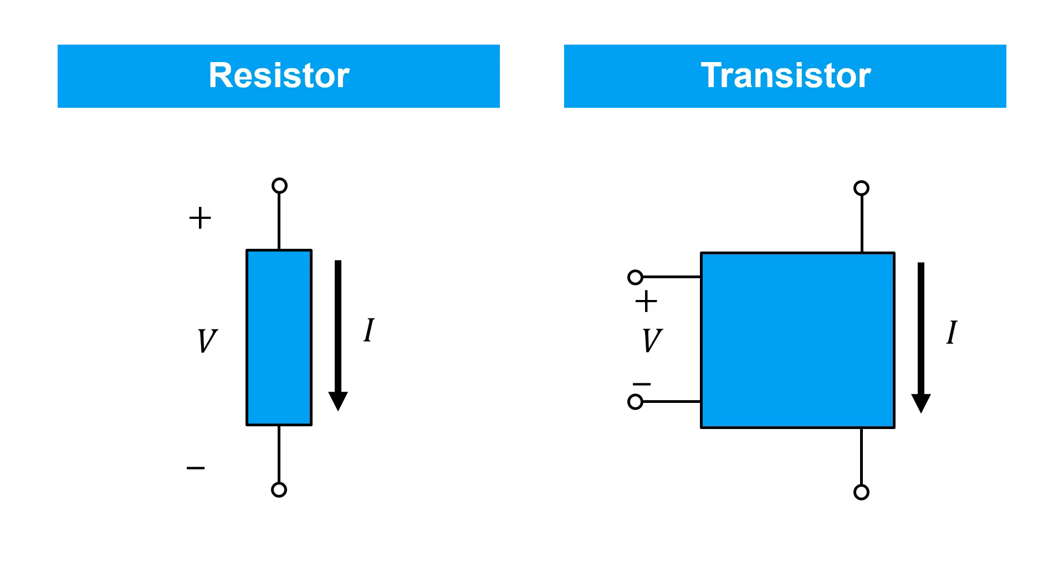That's a two-terminal device where the current flowing between the two terminals depends on the voltage across them. A transistor is a device with three or more terminals, where the current through two terminals depends on the voltage on a third terminal.